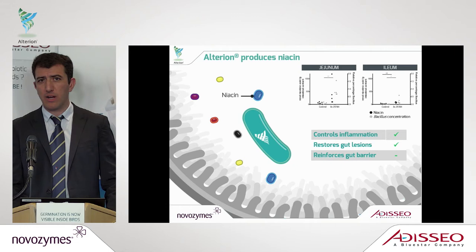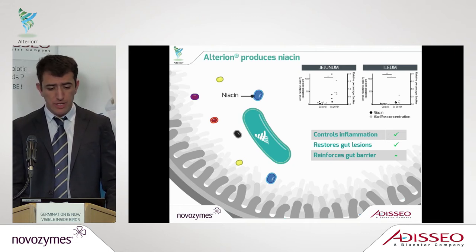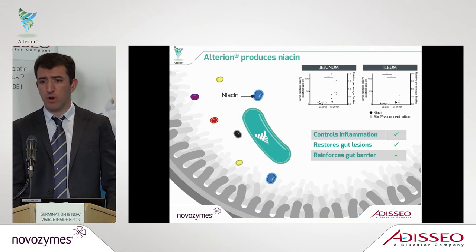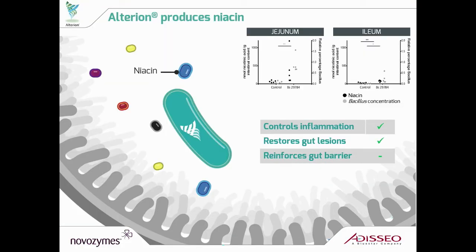Starting by summarizing what we have found about the production of metabolites: we used both an in vitro and in vivo approach to identify and quantify the different metabolites produced by Alterion. We combined the two results to make it robust and to now be able to show that some of the metabolites are really key for the effect of the probiotic and are produced in a consistent way.